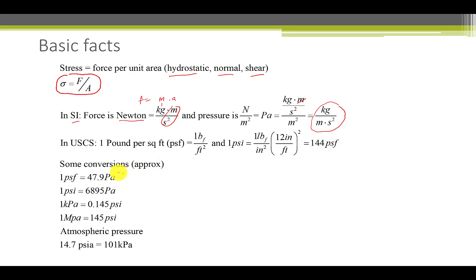Here are some useful approximations converting between USCS and the SI system. One PSF is 47.9 Pascals. A PSF would be the weight of, say, a cookie pan of about a square foot. So a Pascal is a small unit, since it would be about one-fiftieth of that cookie pan. A PSI is 68.95 Pascals. A more practical unit to work with is a kilopascal, but it is only 0.145 PSI. Another unit that we work with often is the megapascal, 145 PSI. And finally, atmospheric pressure is 14.7 PSIA absolute. And that's equivalent to 101 kilopascals.